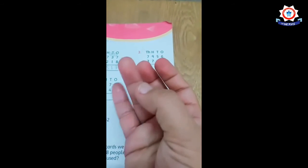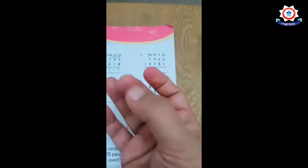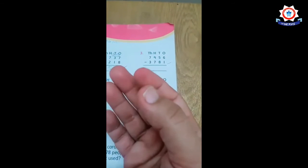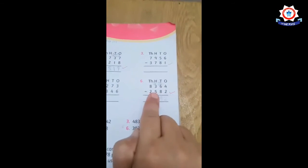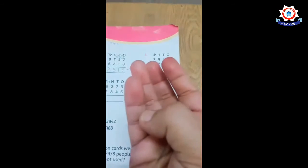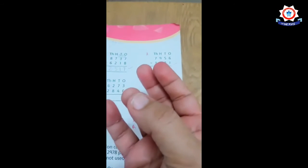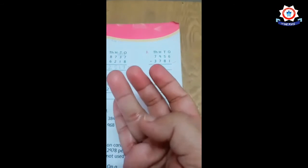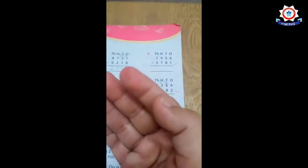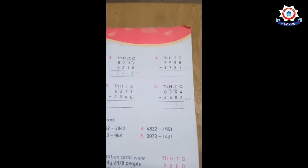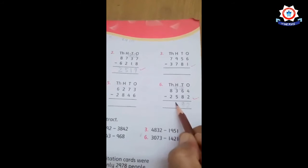Now you subtract 5 from 12. Again count on your fingers: 12 - 1, 2, 3, 4, 5, 6, 7, 8, 9, 10, 11, 12. You subtract 5 - 1, 2, 3, 4, 5. Five subtracted: 1, 2, 3, 4, 5, 6, 7. You get the number 7.